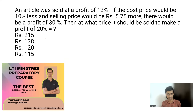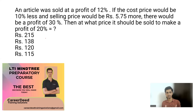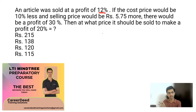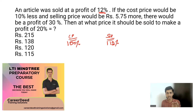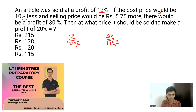Question four: An article was sold at a profit of 12%. If the cost price were 10% less and the selling price were 5.75 more, there would be a profit of 30%. At what price should it be sold to make a 20% profit? An article sold at 12% profit means the selling price is 112% of cost price, where cost price = 100%.